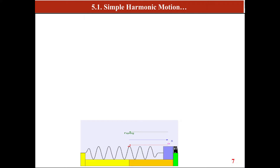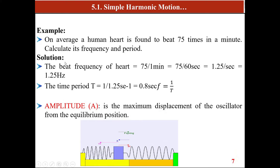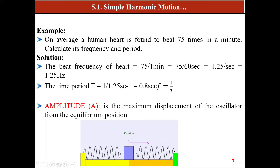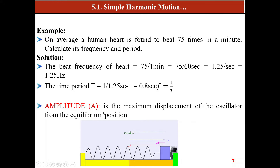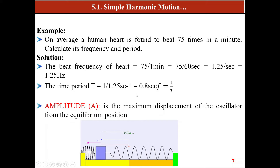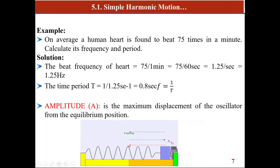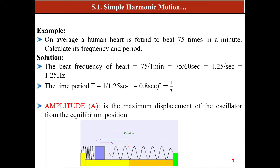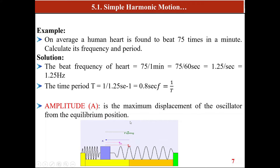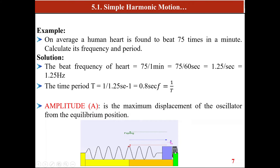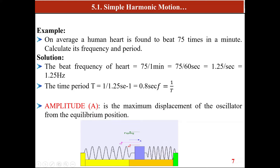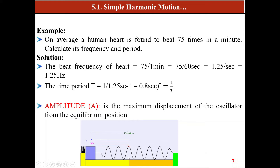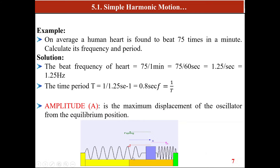Amplitude is the maximum displacement of the oscillator from its equilibrium position. For a spring-mass system, the amplitude is the distance from the equilibrium position to the maximum displacement. For example, the human heart beats 75 times per minute. Since 75 cycles per 60 seconds equals 1.25 cycles per second, the frequency is 1.25 Hz and the period T = 1/1.25 = 0.8 seconds.